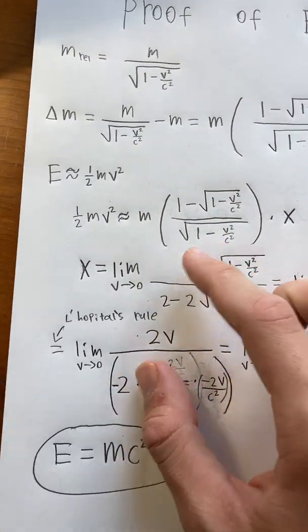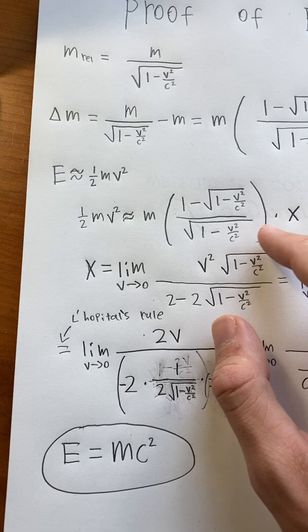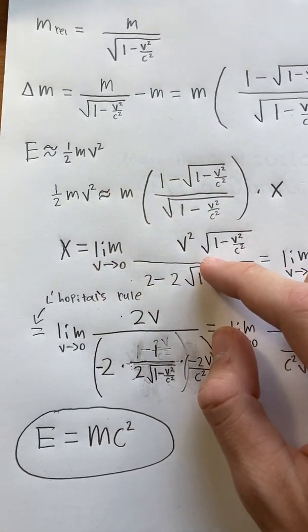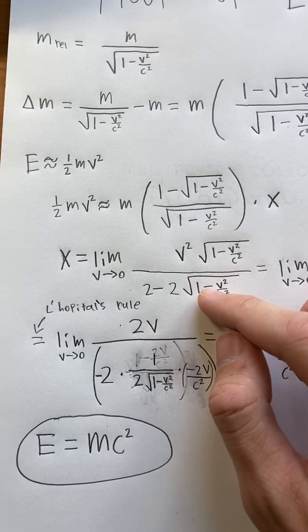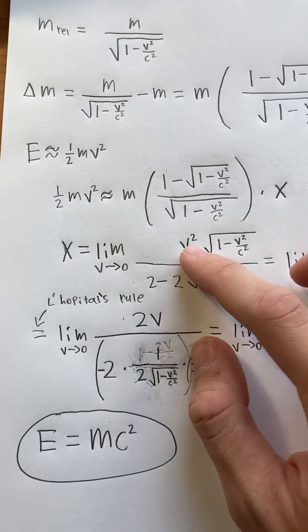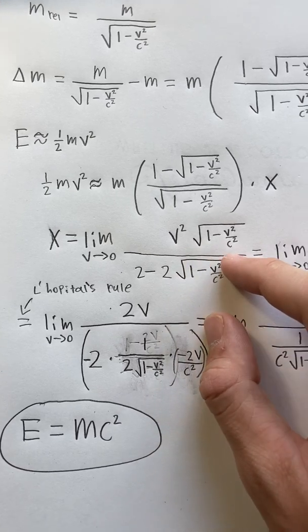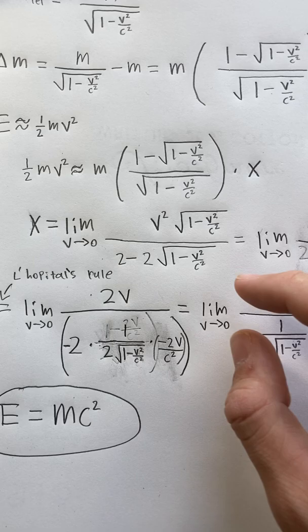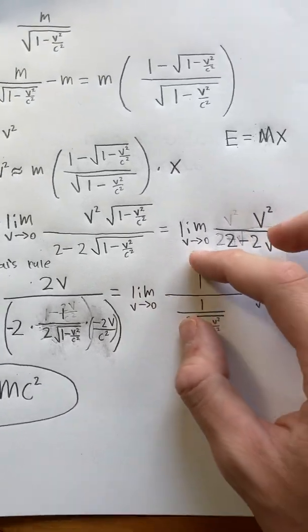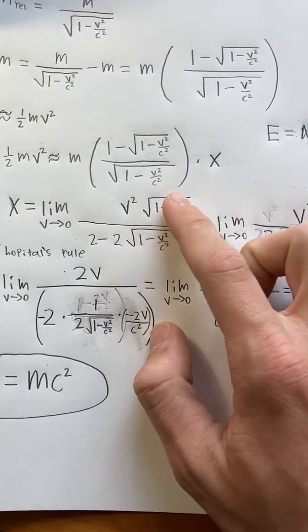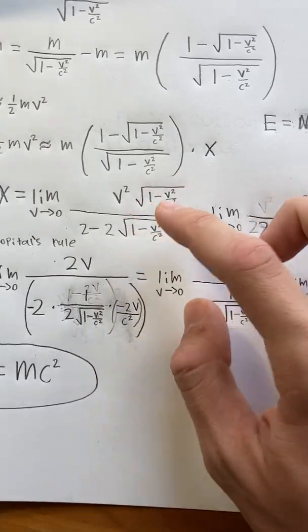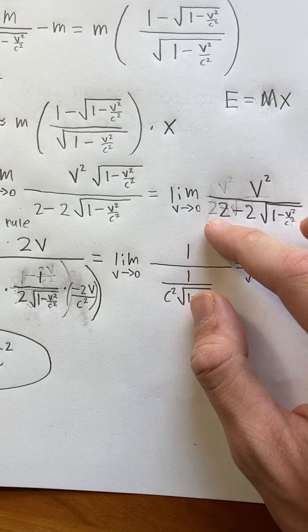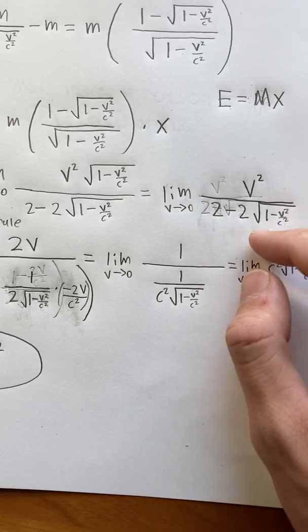So what we can do is we can take the limit as v approaches 0 and divide by this on both sides. The m's cancel out, and we can simplify a little. And we get the limit as v approaches 0, v squared times the square root of 1 minus v squared over c squared divided by 2 minus 2 times the square root of 1 minus v squared over c squared. So then we realize that this term is just going to approach 1, so we can remove it from the limit. So we get v squared divided by 2 minus 2 times the square root of 1 minus v squared over c squared.